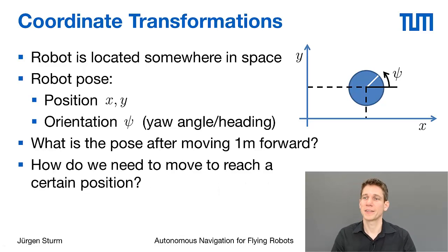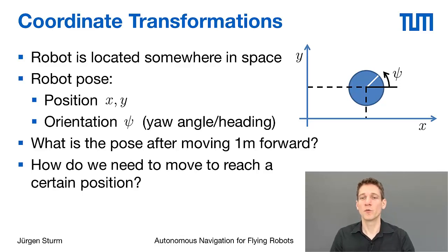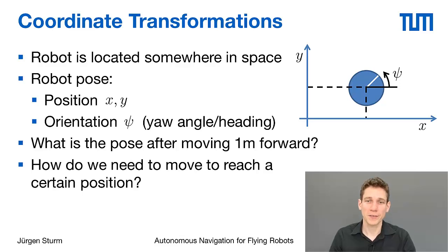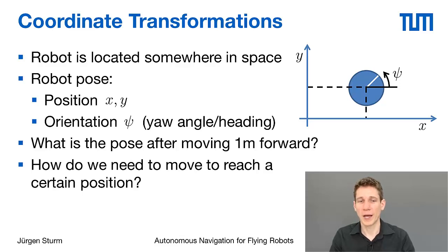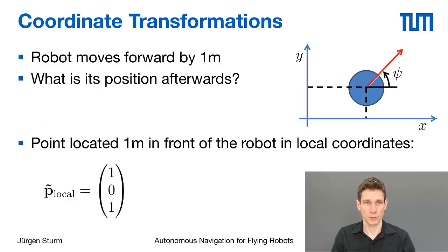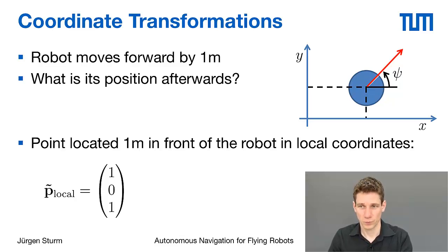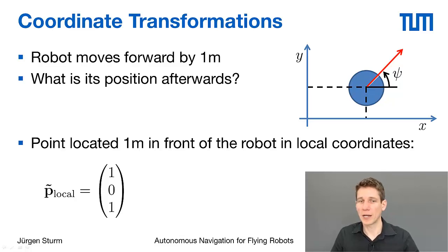Now that the robot is standing somewhere in space, a common task is to find out where the robot would end up if it moved 1 meter forward. We could first describe a point located 1 meter in front of the robot in its local coordinate frame, which would be the vector (1, 0).